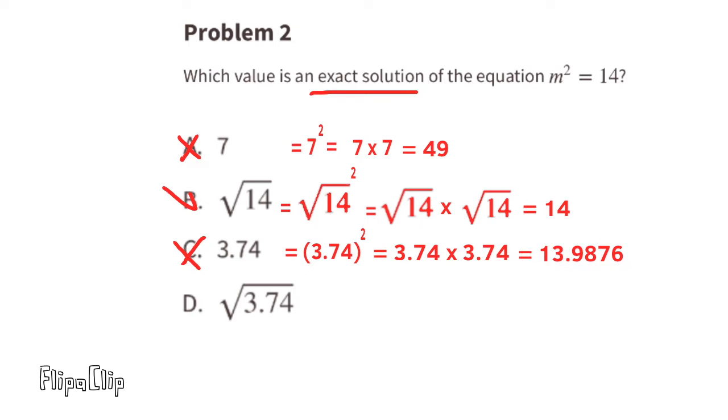And finally, option D: the square root of 3.74. We know that the square root of 3.74 cannot be a solution to the equation m squared equals 14, because the solution was the square root of 14. Therefore, the square root of 3.74 is not a solution to the equation m squared equals 14. In fact, the square root of 3.74 times the square root of 3.74 is 3.74, not 14.